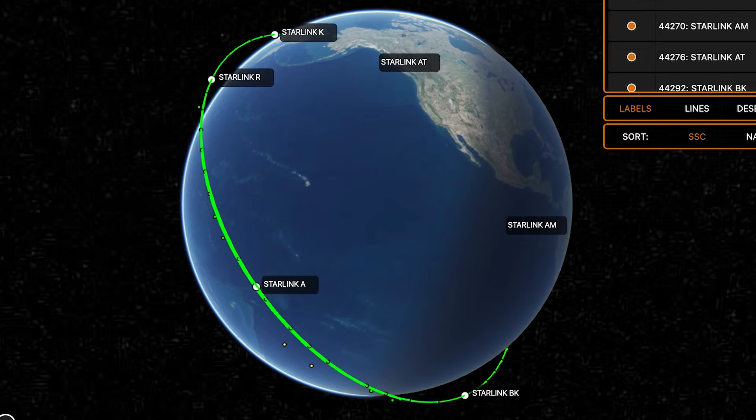One of the main advantages of orbital edge computing is that we eliminate the delay between when sensor data are collected and when they're processed by the computing resources that are co-located with the sensors.